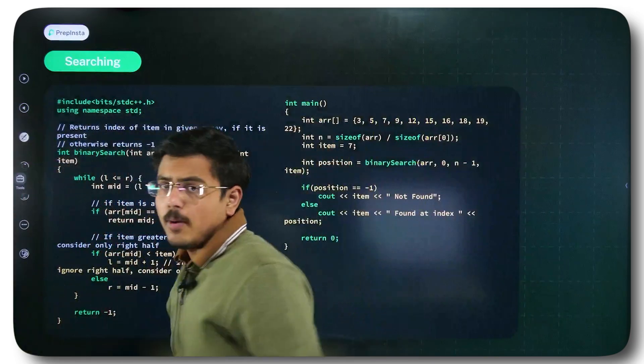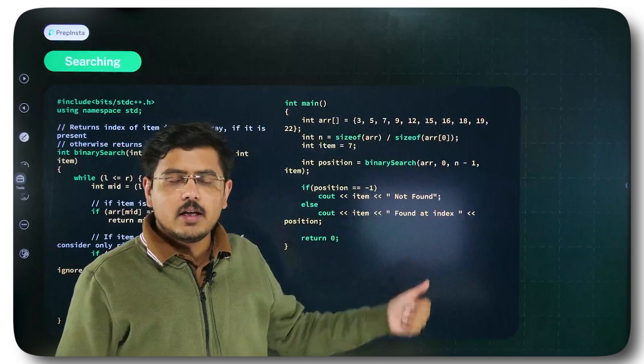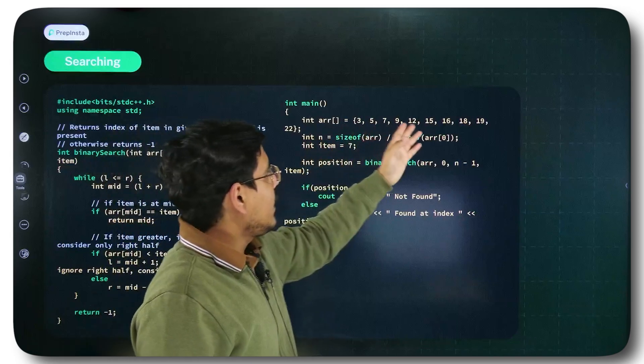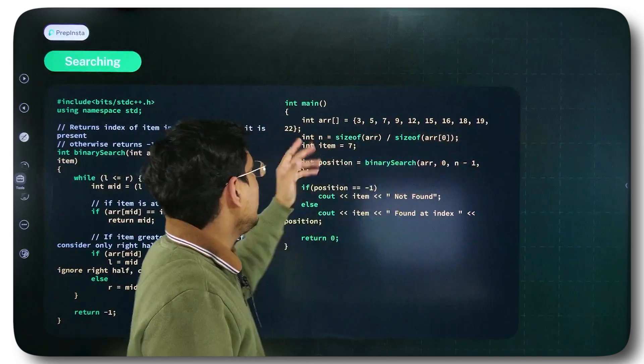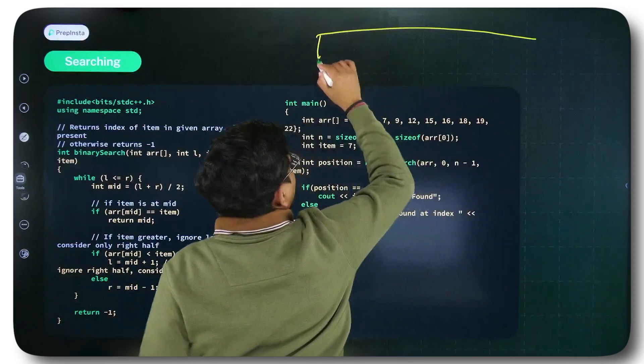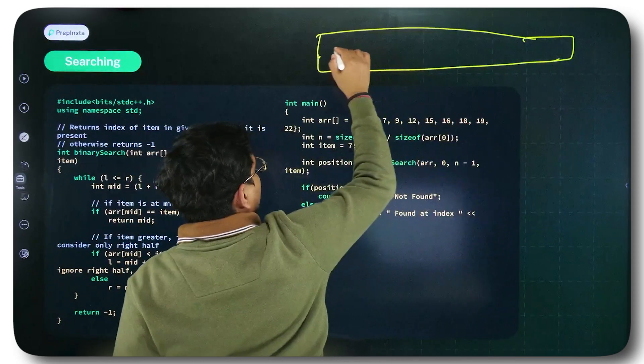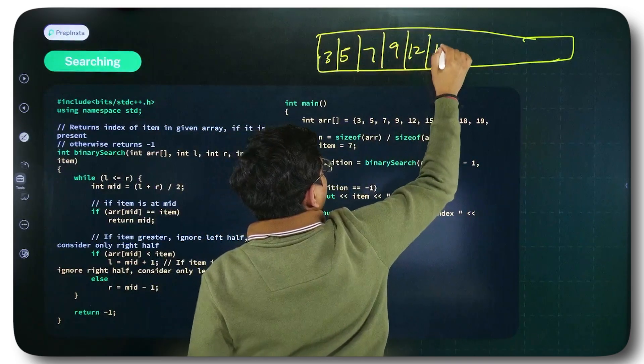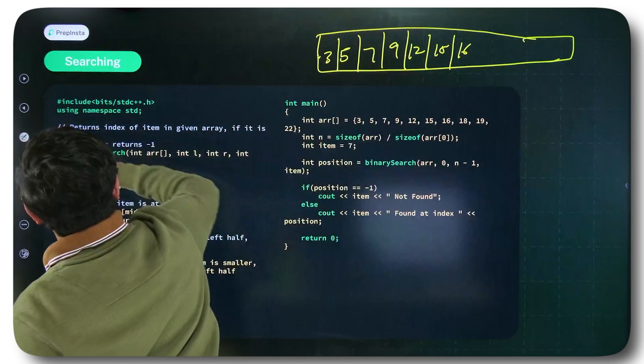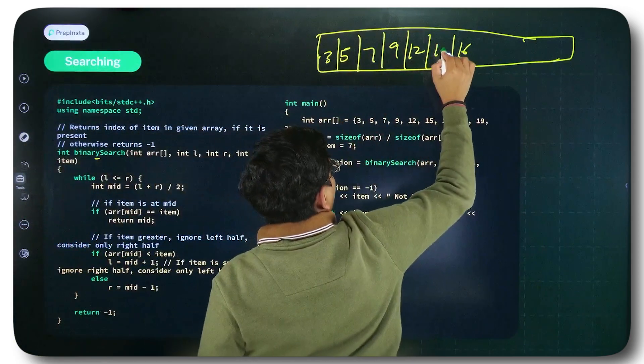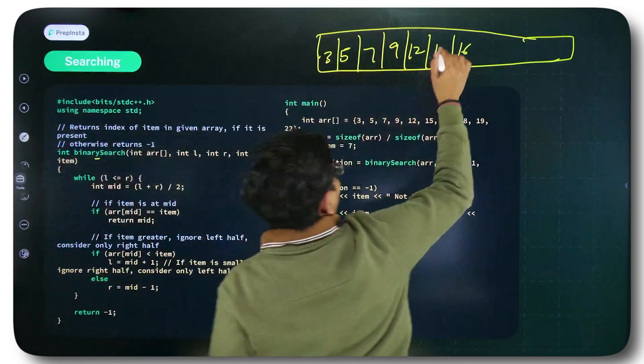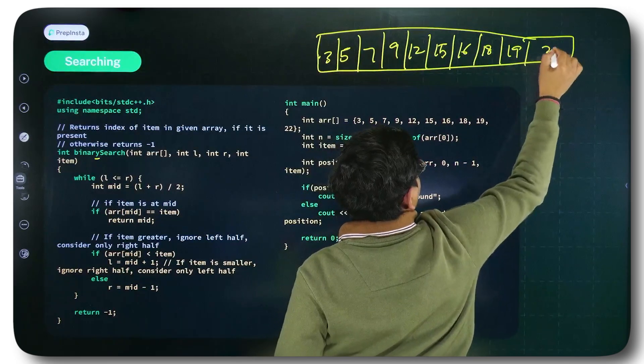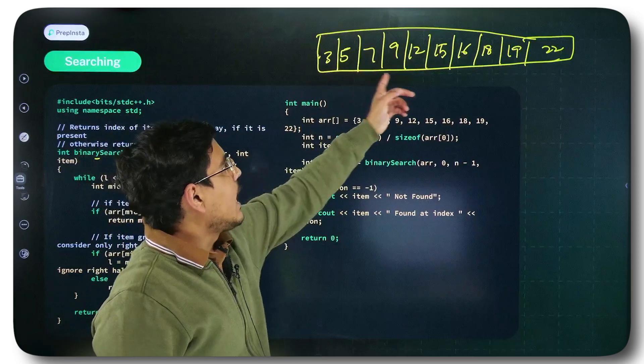See, first we will talk about the portion which is the main portion, in which we simply assign values and execute the function. So what happens here is you have this array 3, 5, 7, 9, 12, 15, 16, 18, 19, 22. I will draw this here so that you have a better understanding of things. This is basically the array that we are having. Now in this array, if you carefully look, this is a sorted array. This is sorted in ascending order.